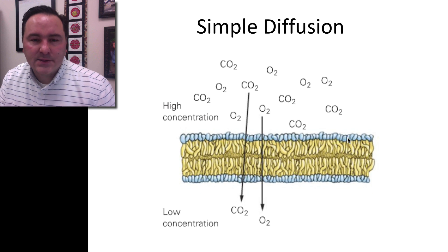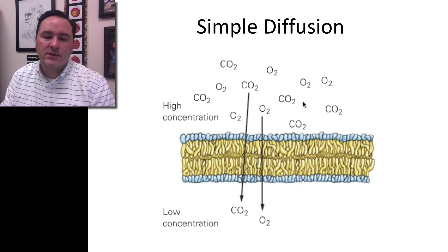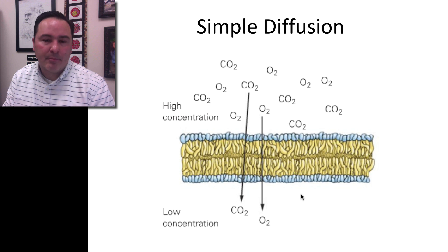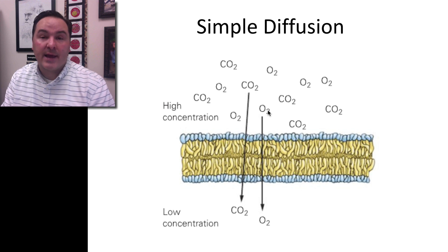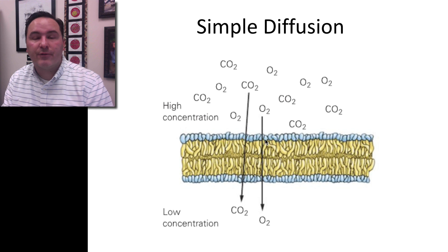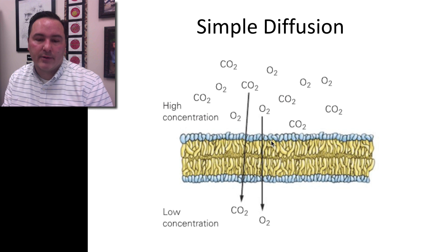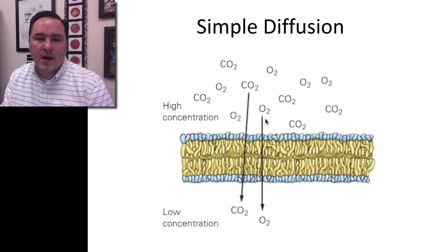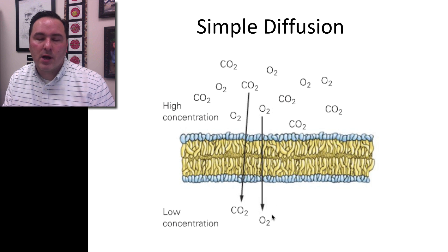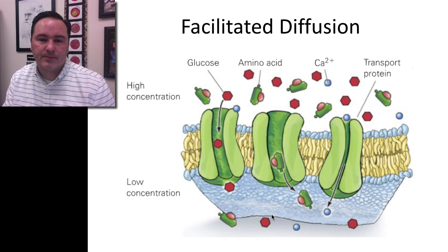Besides water, other molecules can also cross the membrane. For example, carbon dioxide and oxygen can freely cross the plasma membrane or the cellular membrane, and they move from areas of high concentration to areas of low concentration. This is called simple diffusion.